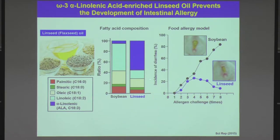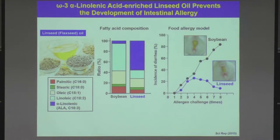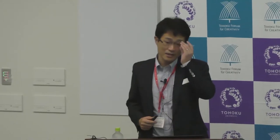One example is linseed oil, also known as flaxseed oil. We employed food allergy models. In the normal chow for Japanese mice from Japanese animal vendors, 4% soybean oil is included. When mice were maintained with this normal chow, they showed allergic diarrhea upon eating egg proteins. But when we replaced soybean oil with linseed oil — without changing the amount — those mice did not show any allergic diarrhea, suggesting that the quality of fatty acid composition is a critical factor in controlling host immune responses and its association with allergic and inflammatory diseases.